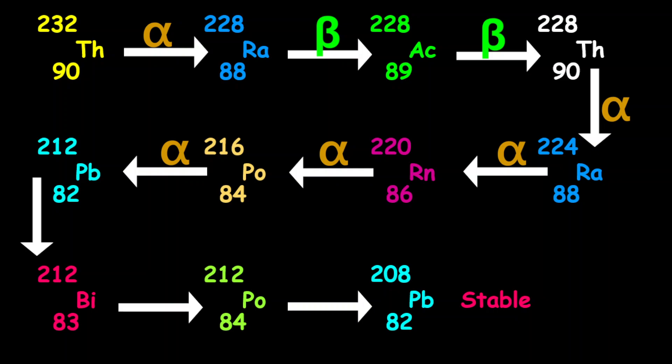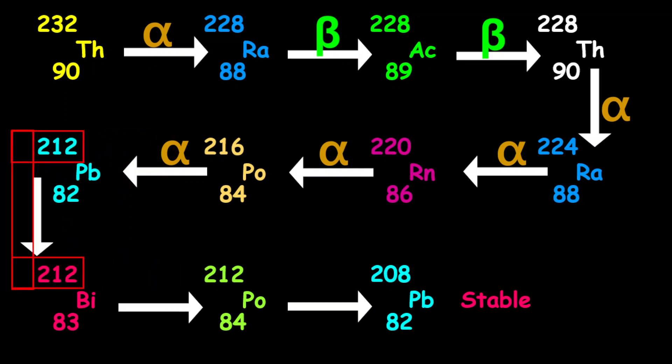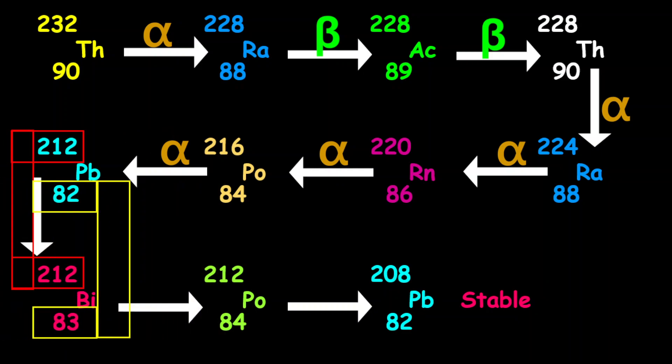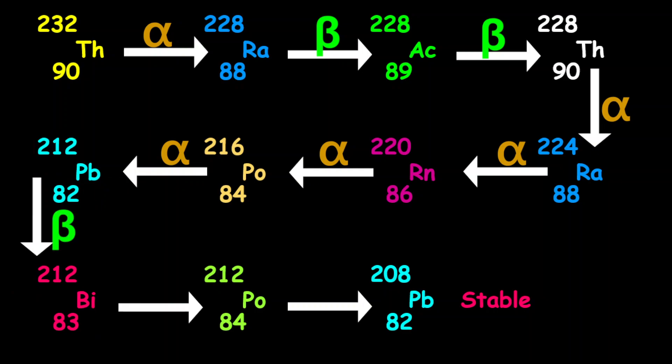Coming from lead-212 into bismuth, the mass number remains the same and the proton number increased by 1, so this is a beta decay.